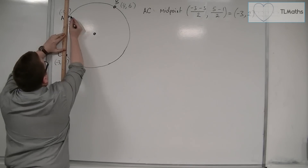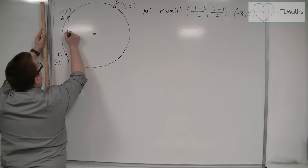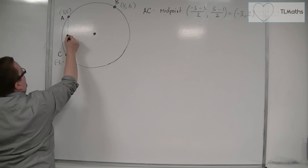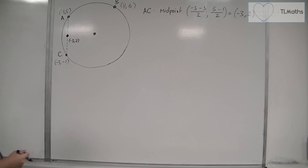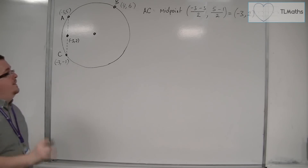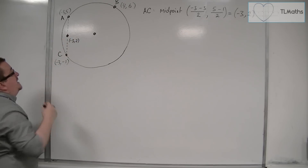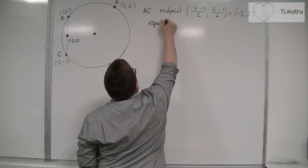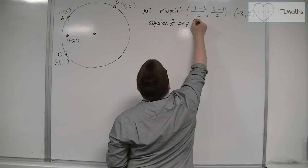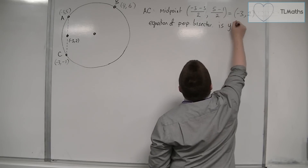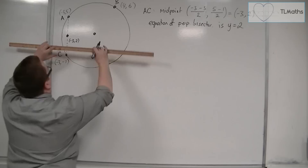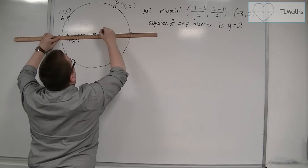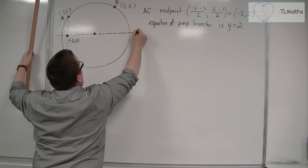We want to find the negative reciprocal of that line in order to find the perpendicular bisector. The midpoint is minus three, two. Because A and C lie on a vertical line, the equation of the perpendicular bisector must just be y equals two — a horizontal line going through these two points.